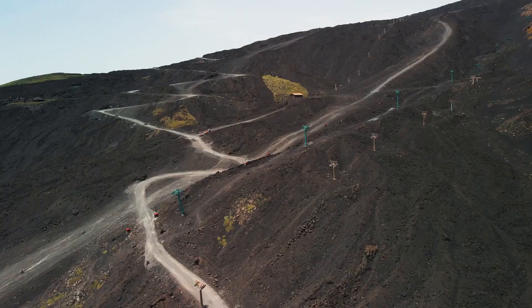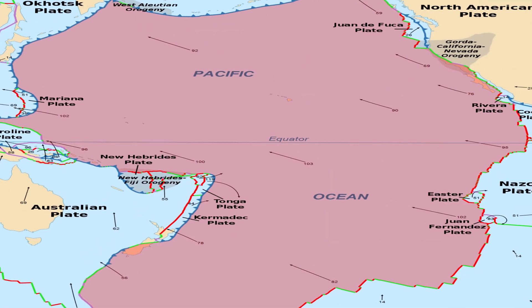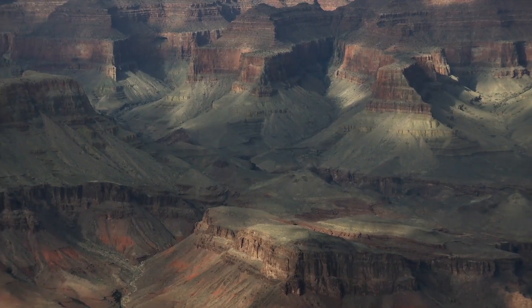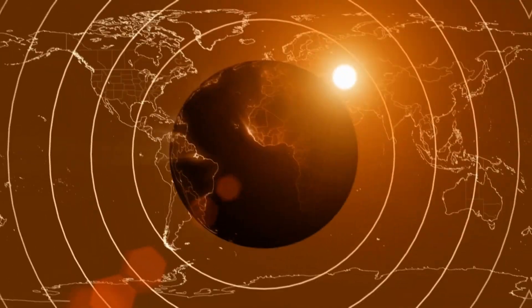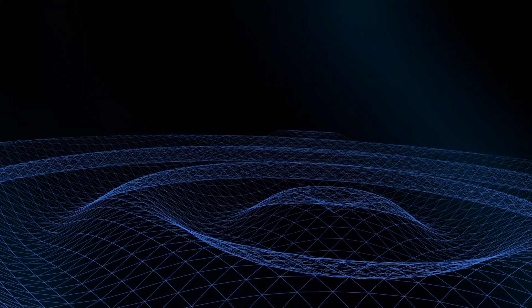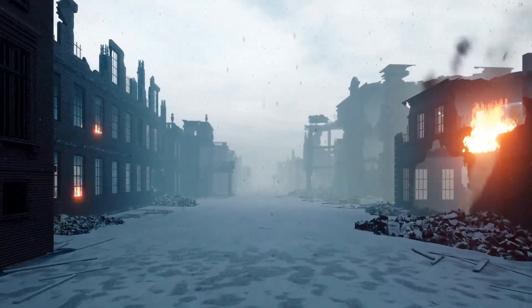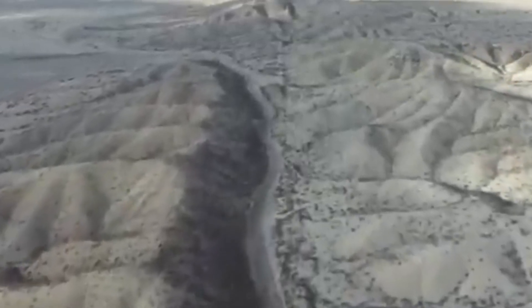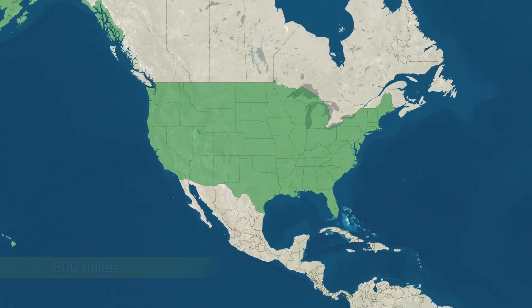One well-known example of a significant fault system is the San Andreas Fault, which passes through California. It represents the location of the major seismic activity border between the tectonic plates of North America and the Pacific. It is essential to comprehend how these plates behave as well as the fault systems in order to assess the theory that connects dried-up lakes to significant earthquakes.